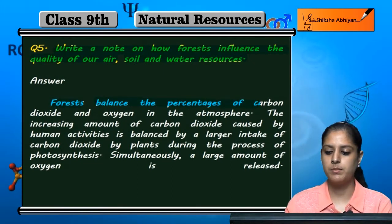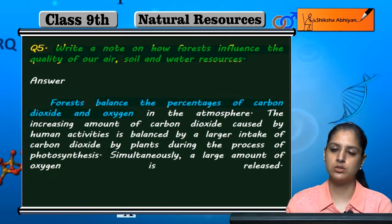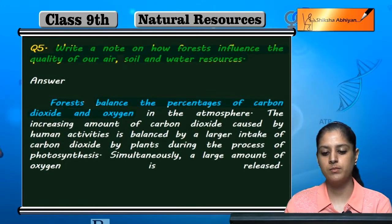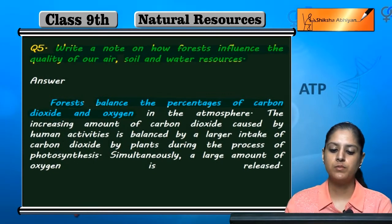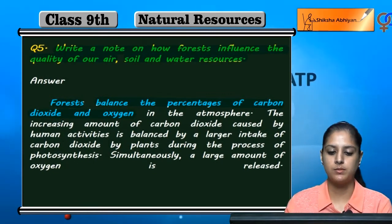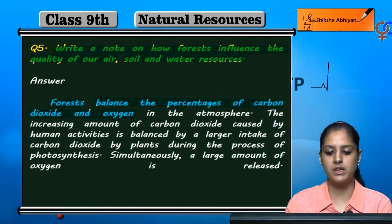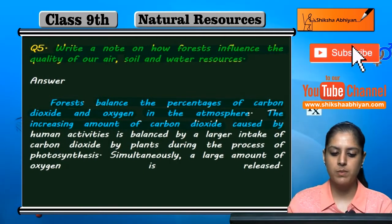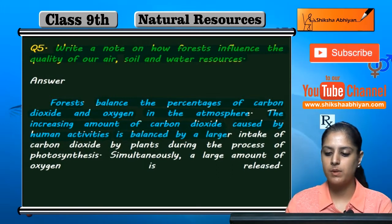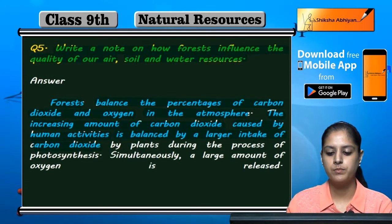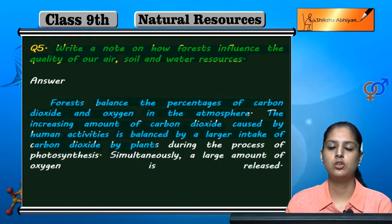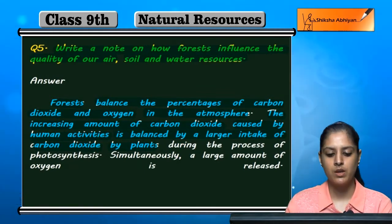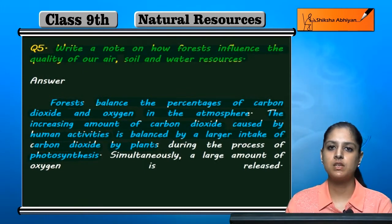Forests balance the percentages of carbon dioxide and oxygen. Plants in the forest carry out photosynthesis — they take in carbon dioxide and give out oxygen. The increasing amount of carbon dioxide caused by human activities is balanced by a larger intake of carbon dioxide by plants, so forest plants take in more carbon dioxide for photosynthesis.